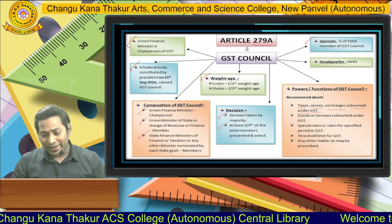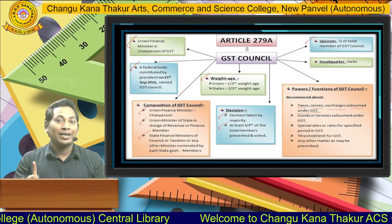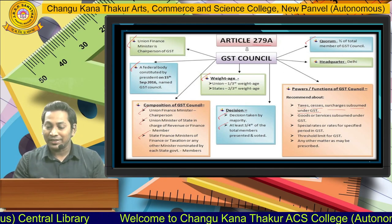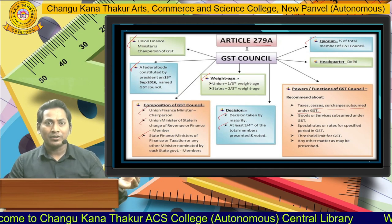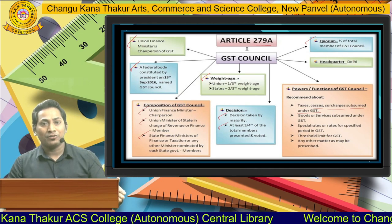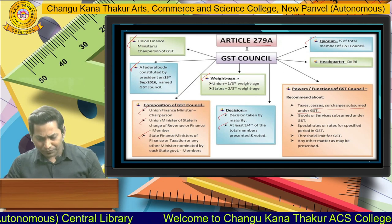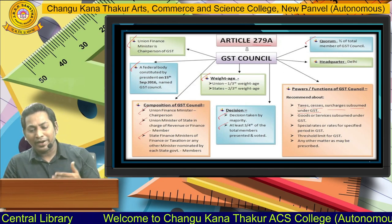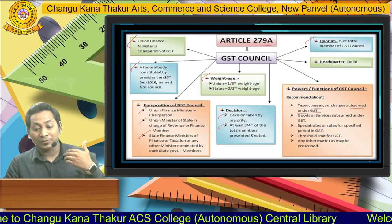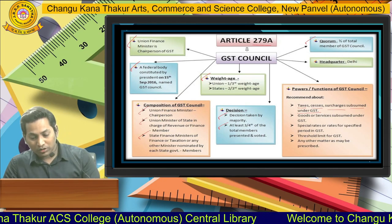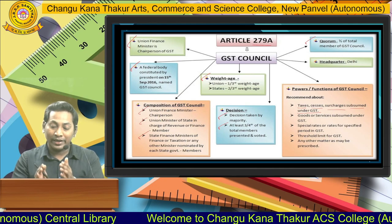The GST Council subsumed all indirect taxes, surcharges, and committed one tax for one nation — Goods and Service Tax. The second function involves classifying goods and services under GST into rate slabs: 0%, 5%, 12%, 18%, and 28%. The GST Council also has the power to provide special rates or rates for specified periods. Additionally, it sets the threshold limit for collecting GST.